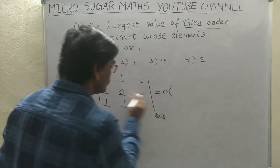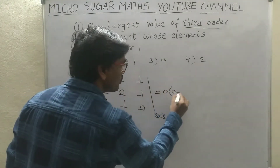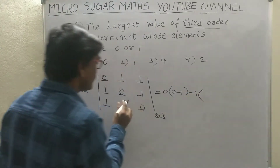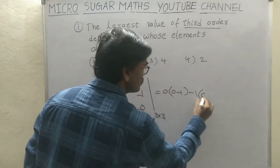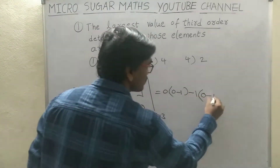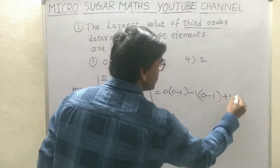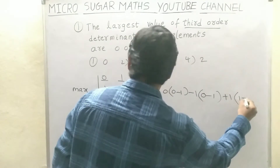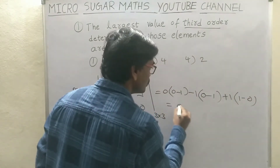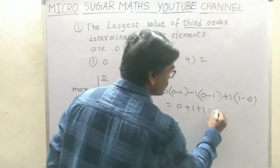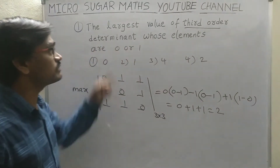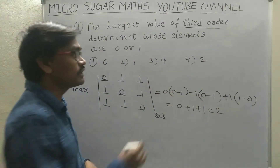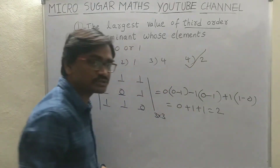That is equal to 0 into (0 minus 1), minus 1 into (minus 1 into 0, 0 minus 1). Next, plus 1 into (1 into 1, 1 minus 0). Therefore, 0 plus 1 plus 1 — what is your largest value of the determinant? 2 is your largest value. Therefore, what is your option? Fourth option.